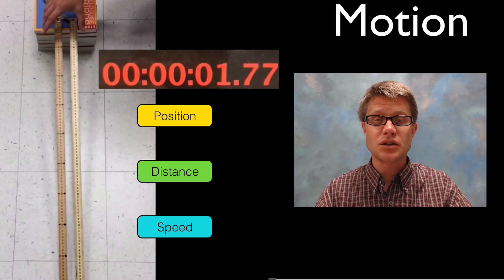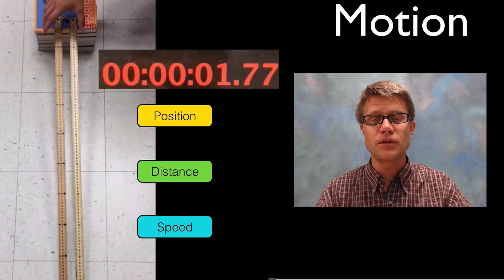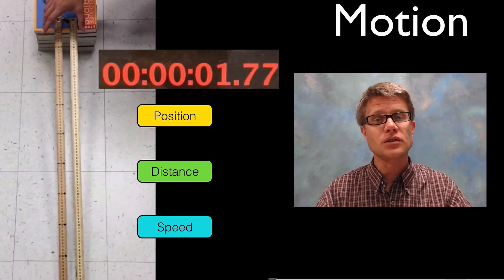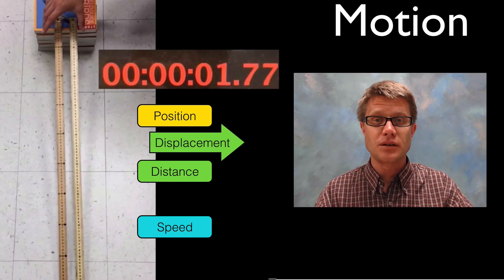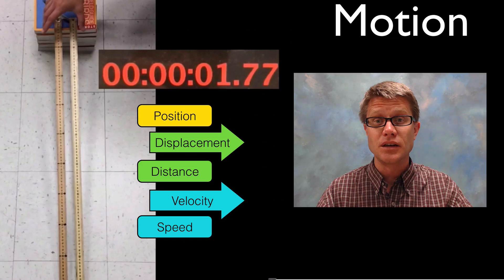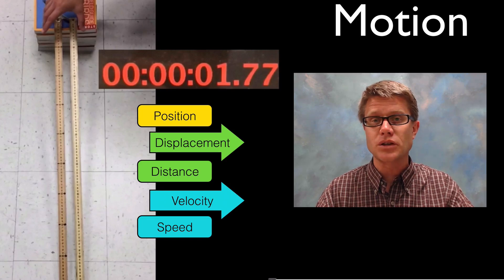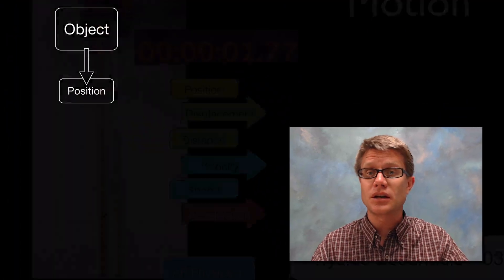Now those terms - position, distance, speed - are all scalar terms. In physics, we try to use vector values because direction is important. Instead of saying distance, get in the habit of saying displacement. Instead of speed, we use velocity - not only the quantity but also the direction. Finally, the change in velocity over time is acceleration.